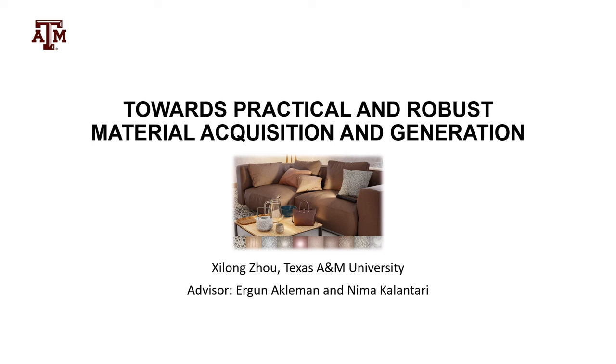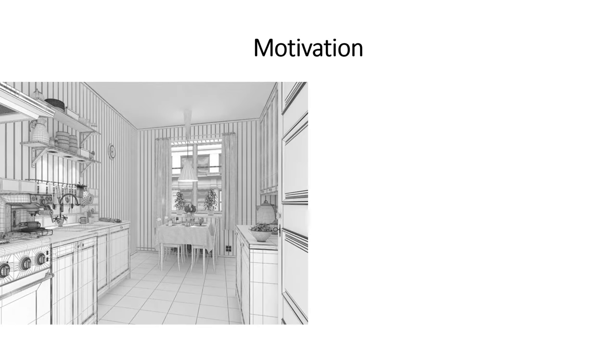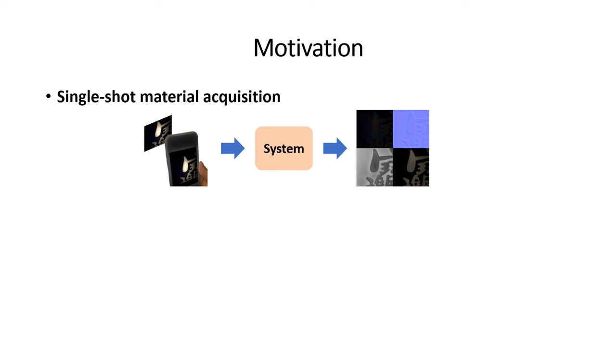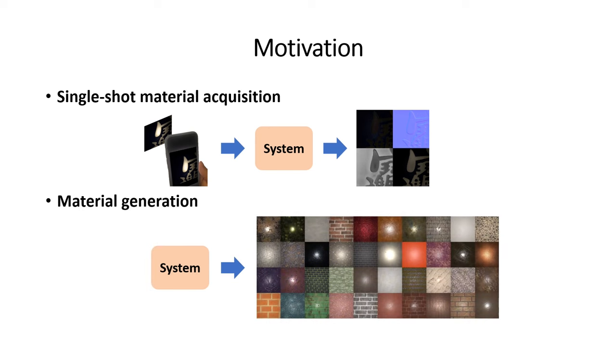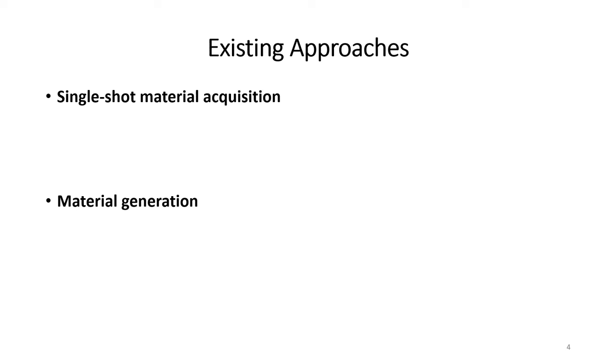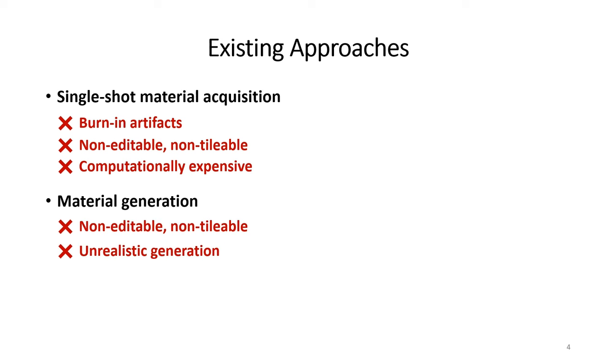I'm Xilong Zhou from Texas A&M University. The topic of my thesis is towards practical and robust material acquisition and generation. In the rendering pipeline, material properties is an important factor determining the appearance of a scene. In general, there are two ways to obtain material properties. Single-shot material acquisition that extract material properties from a single image, and material generation that produce material by sampling random seeds. The existing learning-based methods suffer several limitations. Many acquisition methods produce high light burning artifacts, lack editability, tileability, and their computational expensity. In addition, the existing material generators are not editable and tileable, and the sampled material are not realistic.